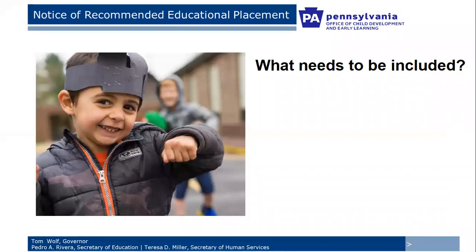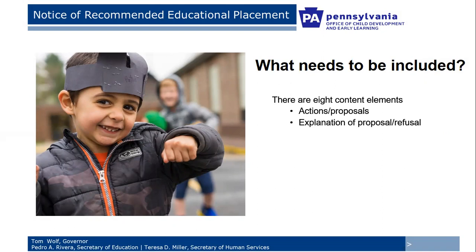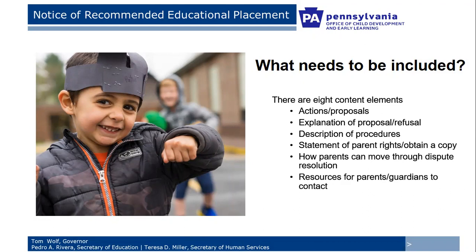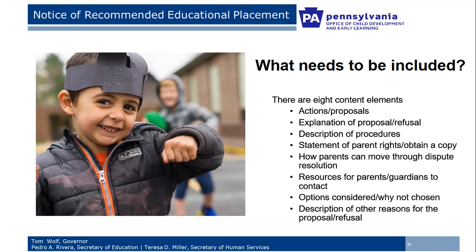What needs to be included in a NORIP? Directly from Chapter 14: a detailed description of the action the preschool program is proposing or refusing to take; an explanation of why; a description of each evaluation procedure, assessment record, or report used in deciding; a statement that the parent has protections under the procedural safeguards provision in Part B of IDEA; how the parent can obtain procedural safeguards and what to do if they disagree; resources if they need help understanding Part B; a description of other choices considered by the IEP team and reasons why not chosen; and other reasons why the preschool program proposed or refused the action. You'll notice each of these requirements corresponds to the item numbers of the NORIP.